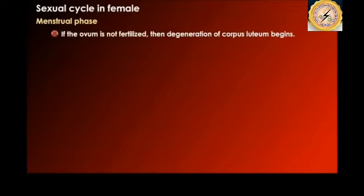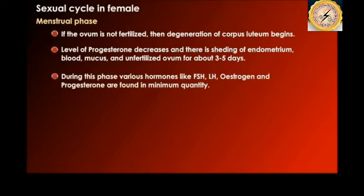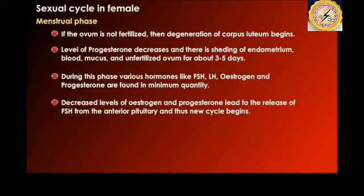In the menstrual phase, if the ovum is not fertilized, the degeneration of the corpus luteum begins, the level of progesterone decreases, and there is shedding of the endometrium — the inner wall — along with blood, mucus, and the unfertilized ovum for about three to five days. During this phase, hormones such as FSH, LH, estrogen, and progesterone are found in minimum quantity. The decreased levels of estrogen and progesterone trigger the release of FSH from the anterior pituitary, and a new cycle begins.